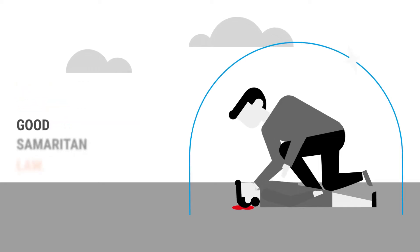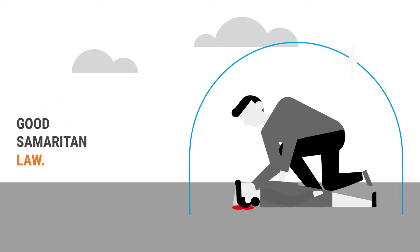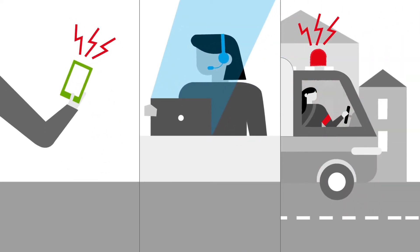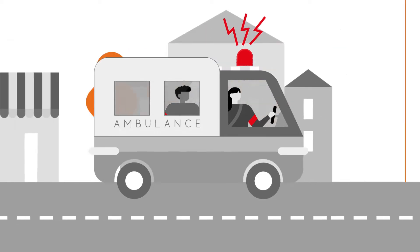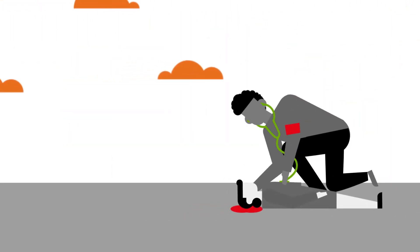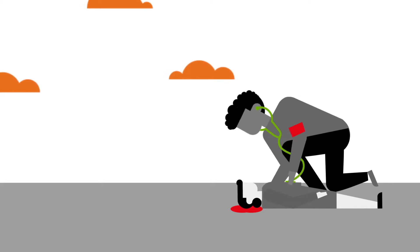Universal access numbers allow bystanders to activate the system so that trained pre-hospital providers can be dispatched. Once at the scene, these providers can rapidly assess and stabilize the patient for transport.